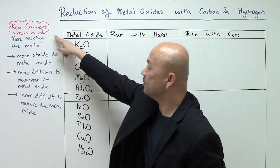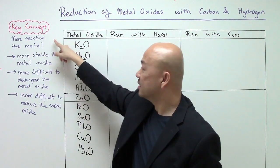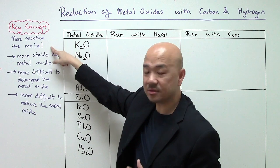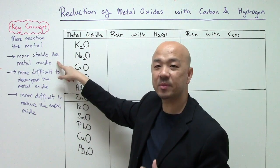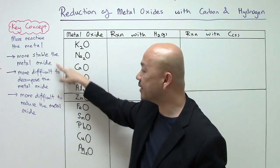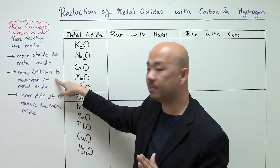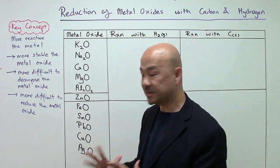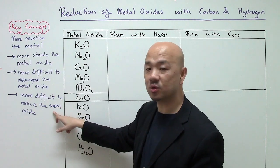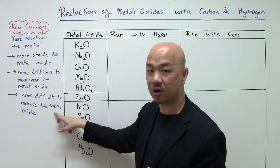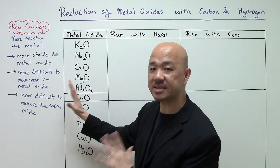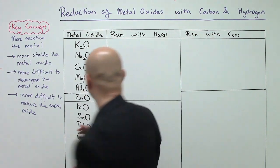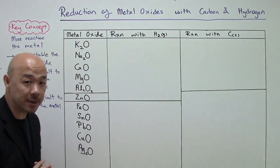The key concept is: the more reactive the metal, the more stable will be the metal oxide. This means it is more difficult to decompose the metal oxide, and therefore more difficult to reduce the metal oxide. Let's look at the table over here.